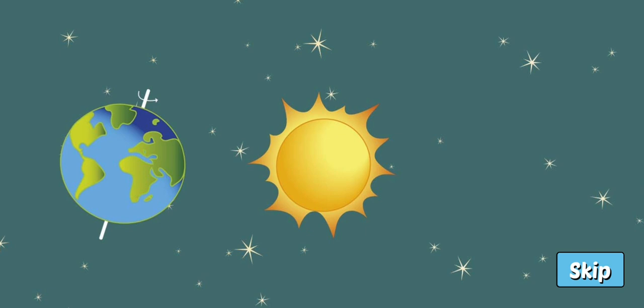This causes the Northern Hemisphere to receive direct sunlight and experience summer. At the same time, the Southern Hemisphere is tilted away from the Sun and receives indirect sunlight, which causes winter.